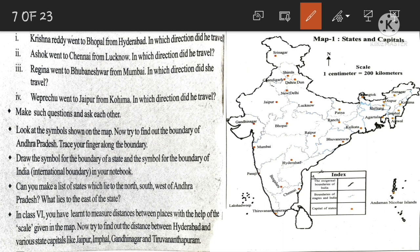Look at the symbols shown on the map and try to find out the boundaries of Andhra Pradesh. Symbols used in this map are given in the table. Boundaries of India are dark lines and state boundaries are light lines. Capitals are indicated with dots. Andhra Pradesh in the India map is to the south of Odisha and north of Tamil Nadu.